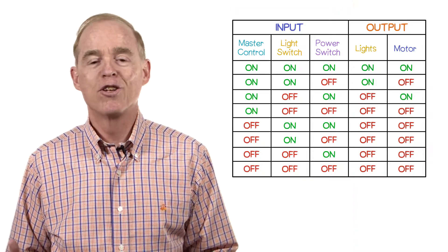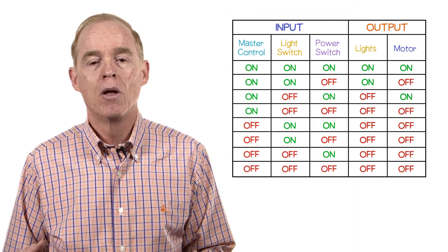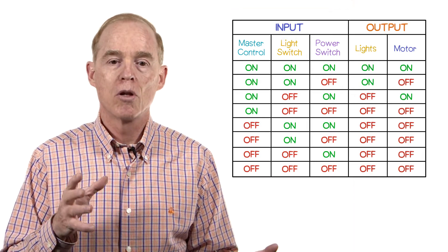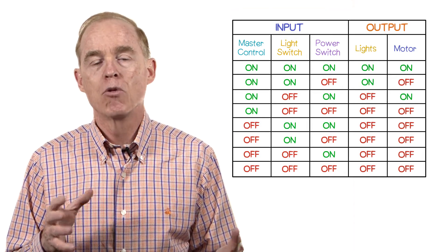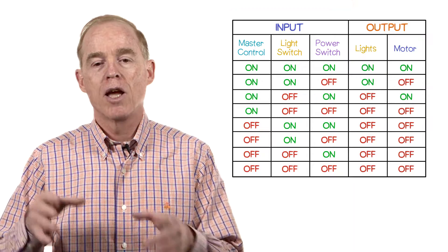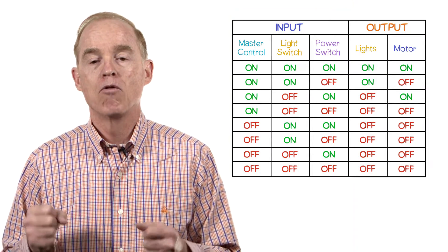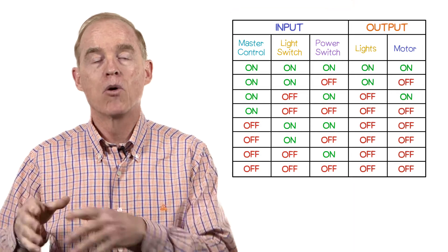Here's a decision table for this situation. I've partitioned the columns into three input columns for the three different switches and two output columns for the lights and the motor on the power drill.